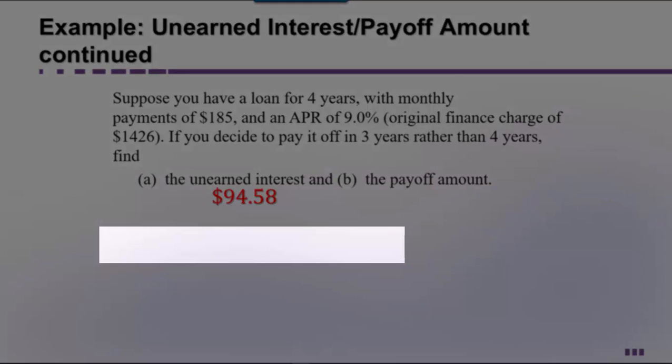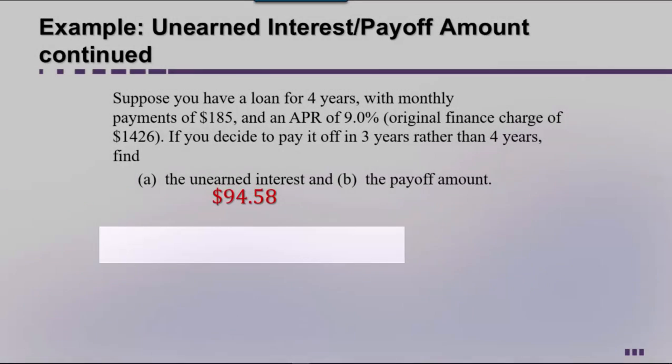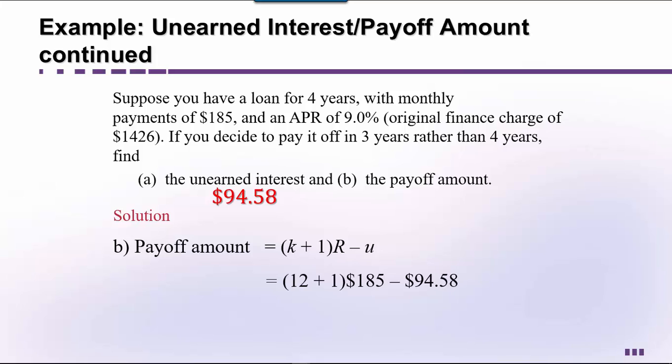Writing down the formula: payoff amount equals (K plus 1) times R minus U. Plugging in 12 for K and $185 for R, and subtracting the unearned interest of $94.58, gives us 13 times $185 minus $94.58, which equals $2,405.00 minus $94.58, or $2,310.42. This is our total payoff amount.